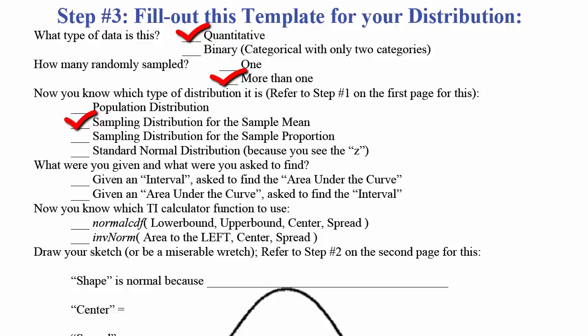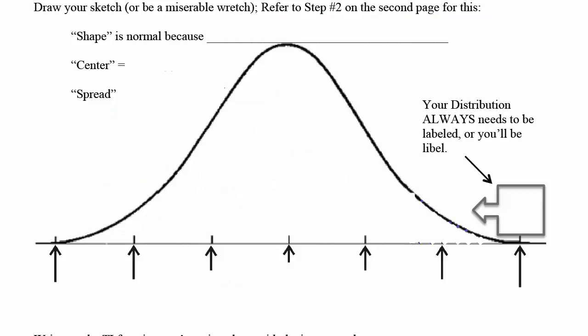Now let's make our sketch. We know which distribution we're working with, so label it. What goes in the box? It's the distribution of all possible sample means, so put x̄ in there. Always label your distributions since we have several different ones and you want to be clear which one you're discussing.